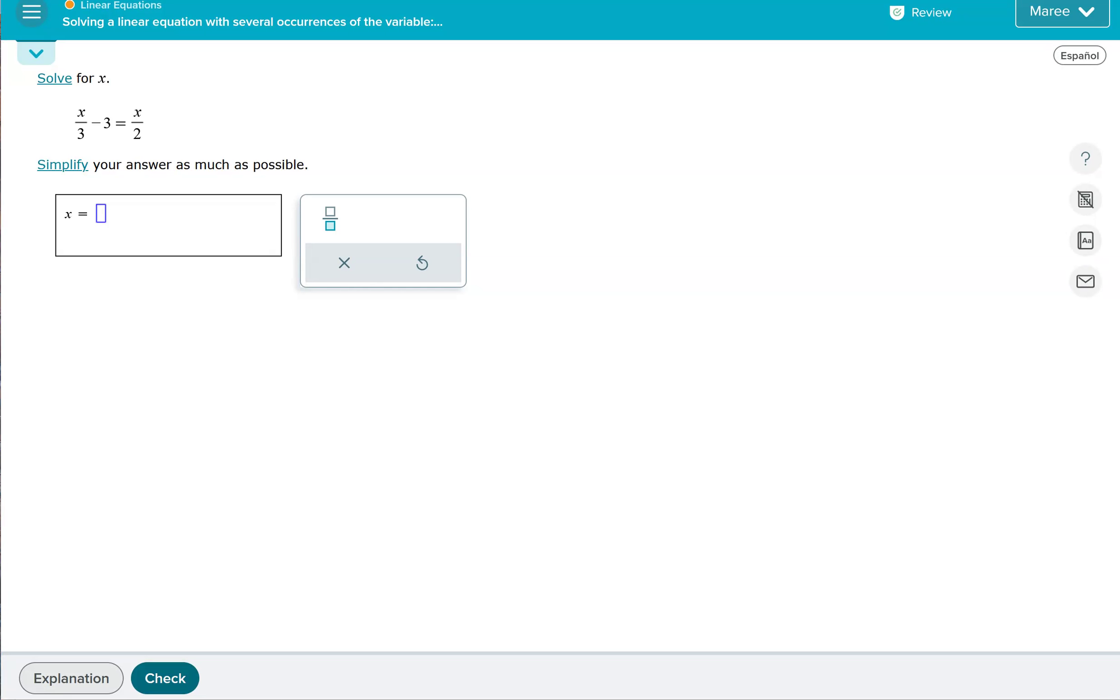This topic is called solving a linear equation with several occurrences of the variable, fractional forms with monomial numerators. It's a very long title. We're still solving for a variable. They say there's several occurrences, so there's going to be multiple terms with the variable in it. There's going to be fractions, so there's denominators in the equation which we're going to get rid of first thing.